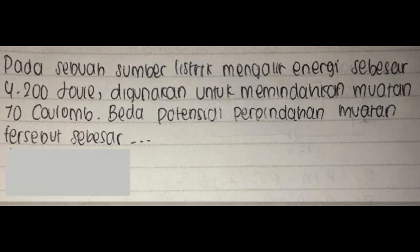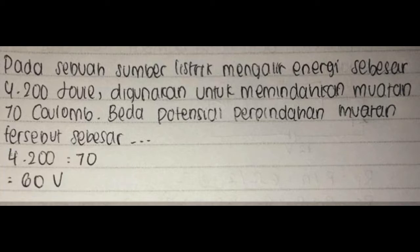Soal 5: Pada sebuah sumber listrik mengalir energi sebesar 4.200 Joule digunakan untuk memindahkan muatan 70 coulomb. Beda potensial perpindahan muatan tersebut sebesar? Jawaban: 4.200 dibagi 70 sama dengan 60 V.